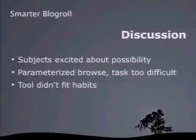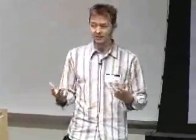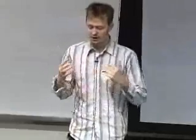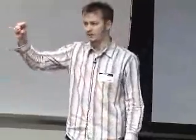Interestingly, there was actually no difference in task performance — people had the same number of correct hits and false positives whether they had the Smarter Blog Roll or the classic one. One reason is that we tried to parameterize a browse task, but participants ended up doing a search task instead. They'd look at the list of topics we gave them, find one like 'bicycles,' and search for a post about it — not the way we had envisioned.